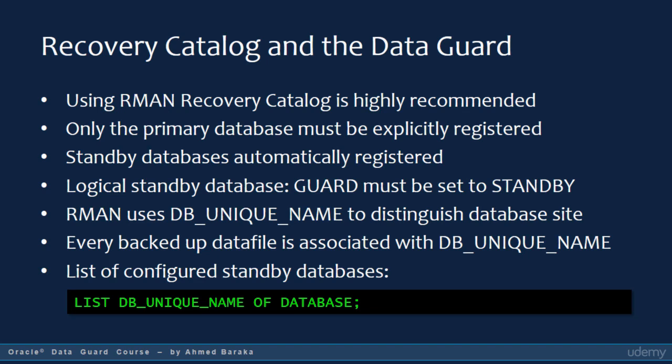However, for a logical standby database to be used in the recovery catalog, its guard setting must be set to the standby value. To distinguish between the databases registered in the catalog, RMAN uses the DB unique name parameter. Every backed-up data file is associated with a DB unique name, which represents the database from which the backup was taken.